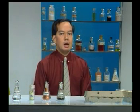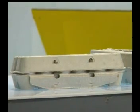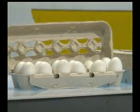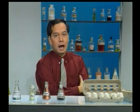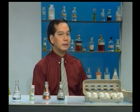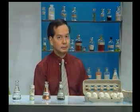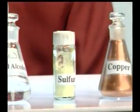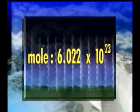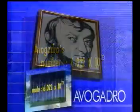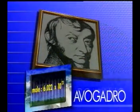Think about this: when we buy eggs in the grocery store, sometimes we can get them in boxes containing a dozen eggs each. It is not important to count the eggs one by one. As long as each box is full, you know that it contains a dozen eggs — we just count the number of boxes. Similarly, substances can be counted in moles. In each mole, there are 6.022 times 10 to the 23 particles. This number is called Avogadro's number, in honor of the Italian scientist Amadeo Avogadro.